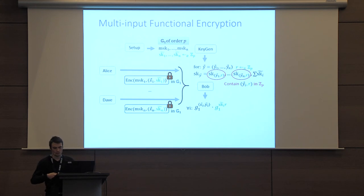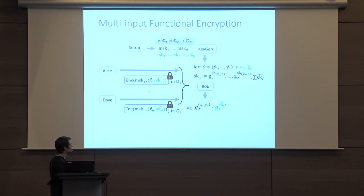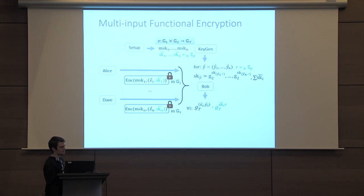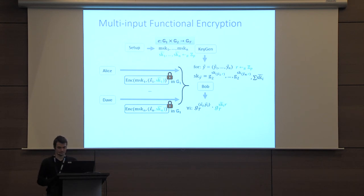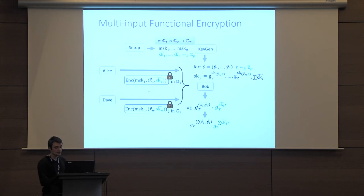What we do is use a pairing from source groups G1 times G2 to a target group. The ciphertext part remains unchanged, but now the secret key is put in the exponent — instead of having Zp elements, we have group elements in G2. This is fine because the secret key only reveals G2 to the r. To decrypt, we now need a pairing to compute this product, and what we get is the same as before but in the target group. We then use DDH to hide the partial inner product. For correctness, we can still combine all of these values because this is an ElGamal encryption, and because the sum of all sk_tilde_i's is included in the secret key for vector y — so Bob can decrypt and recover the inner product.